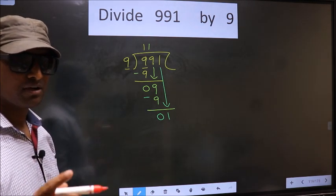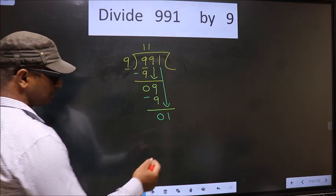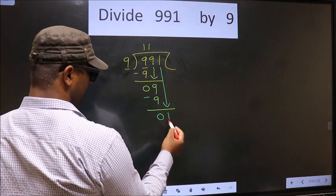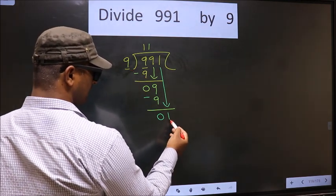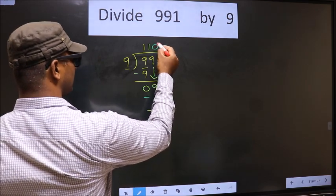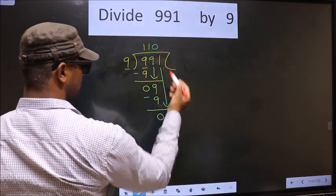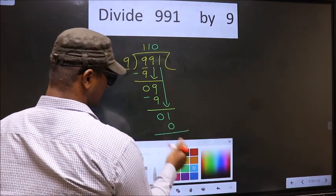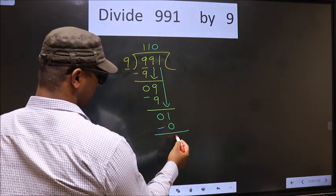Instead, what you should think of is what number should we write here. If we write 9 here that is larger than 1. So what we do is we take 0 here. So 9 into 0, 0. Now you subtract. 1 minus 0, 1.